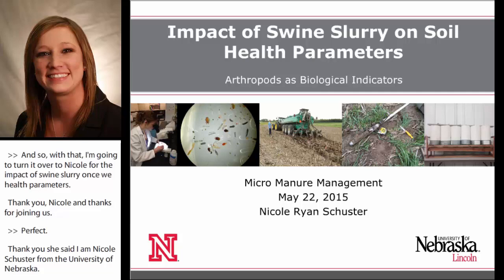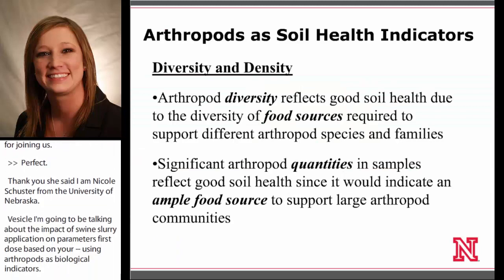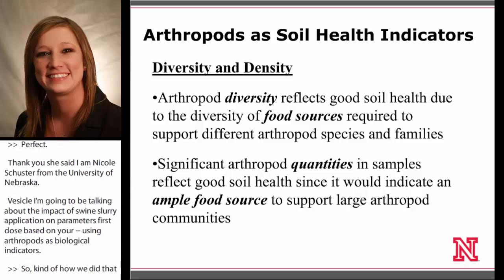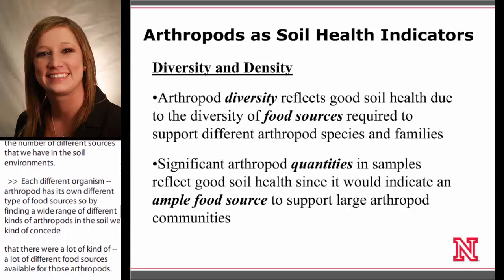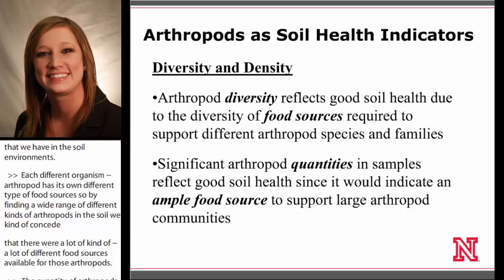In our study, we counted for the diversity and density of arthropods in the soil. Arthropod diversity reflects good soil health by demonstrating the number of different food sources in the soil environment — each different kind of arthropod has its own different types of food sources. The quantity of arthropods in the soil is also a good representation of soil health, as it means those different soil components are found in significant quantities to support that many arthropods.